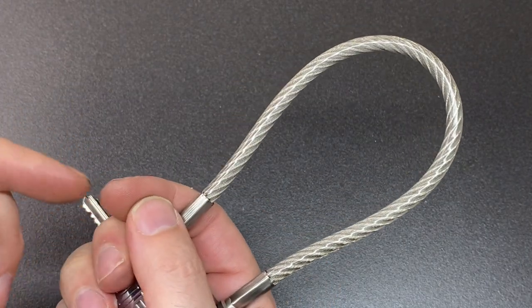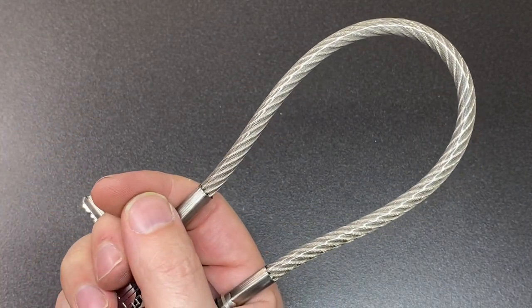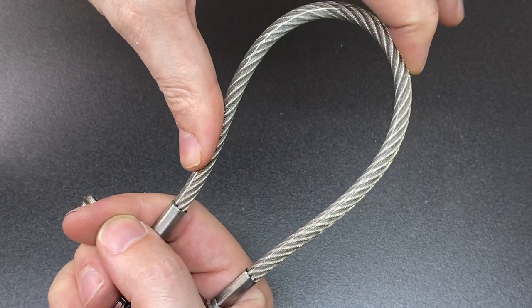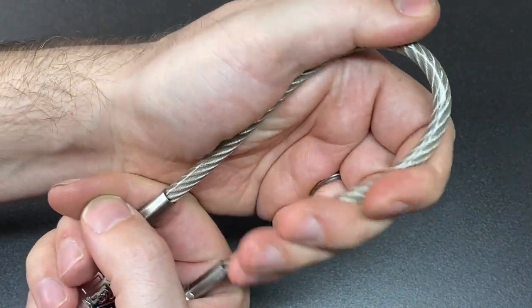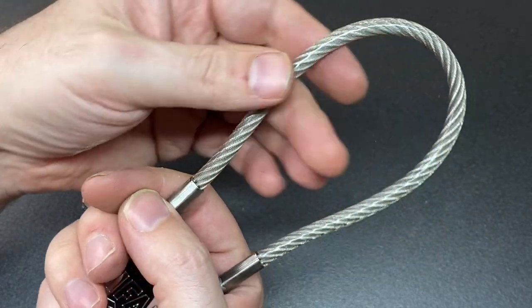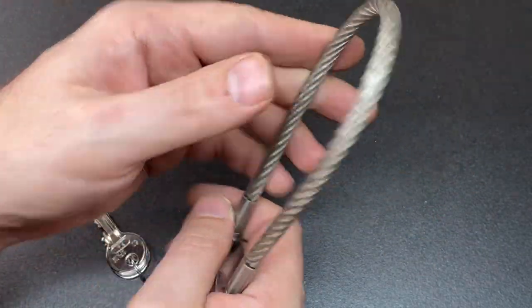Why would I want a shackle like this? Well, as far as I can tell, it's to be locking up things like hard cases, Pelican cases, that kind of stuff while on a boat. But I'm sure there are many other uses for a padlock like this on a boat.